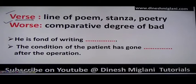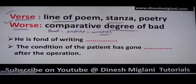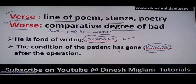Next: verse (V-E-R-S-E) is a line of a poem or stanza. Worse (W-O-R-S-E) is the comparative degree of bad — bad, worse, worst. Examples: 'He is fond of writing verses.' 'The condition of the patient has gone worse after the operation' — meaning the patient's condition is comparatively not good.